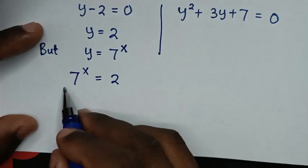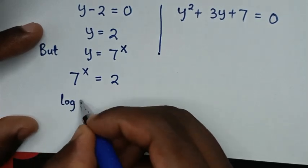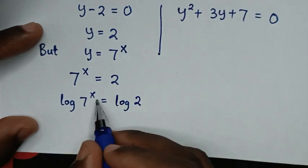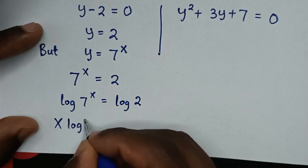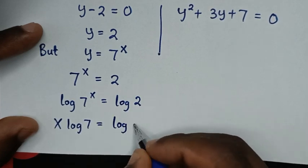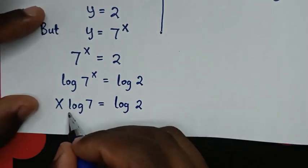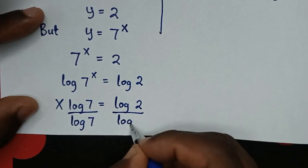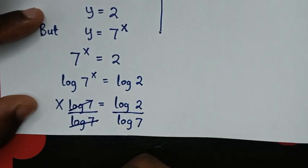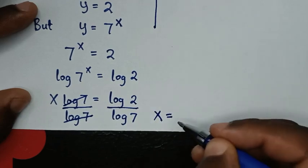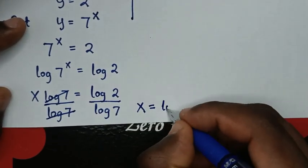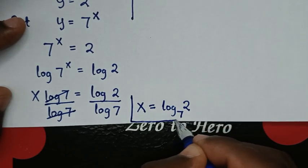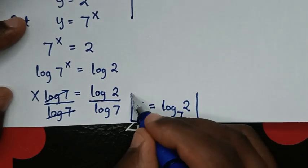We apply log to both sides: log of 7 power x equals log of 2. The power x moves to the front, giving x times log 7 equals log 2. Dividing both sides by log 7: x equals log 2 over log 7, which is the same as log of 2 base 7. This is the final answer for x from the first solution.